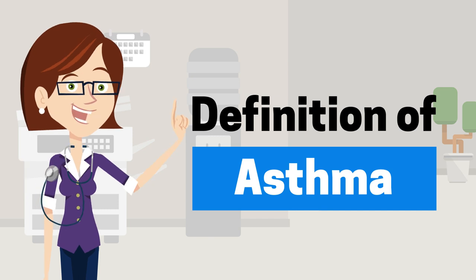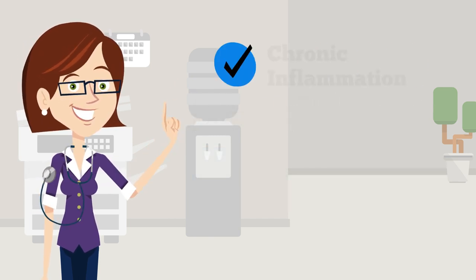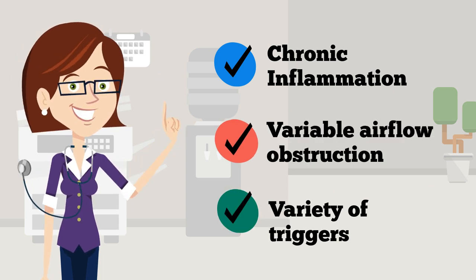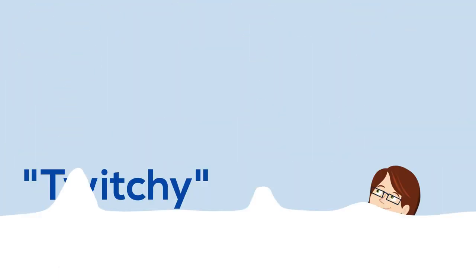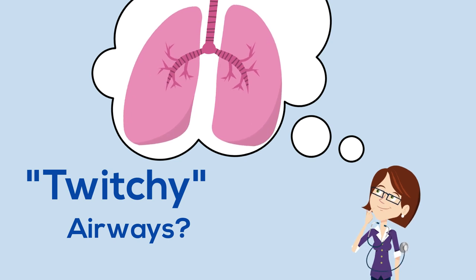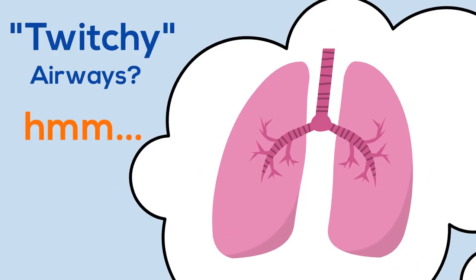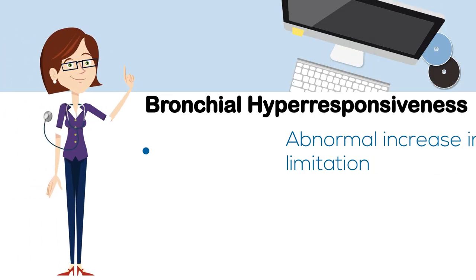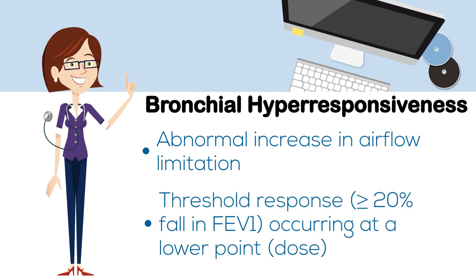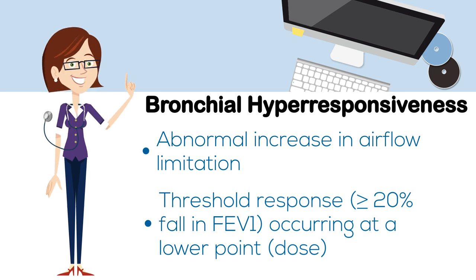Asthma is a disorder of the airways with the following features, including hyper-responsiveness to a variety of triggers. This hyper-responsiveness, or so-called twitchy airways, can be evaluated with many types of stimuli. Bronchial hyper-responsiveness is an abnormal increase in airflow limitation following exposure to a stimulus, or alternatively, a threshold response of a greater than or equal to 20% fall in FEV1 occurring at a lower point compared to a healthy individual.